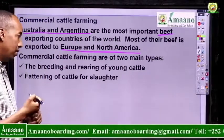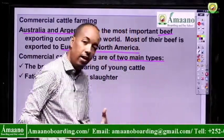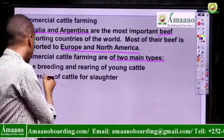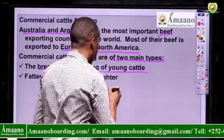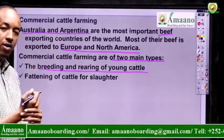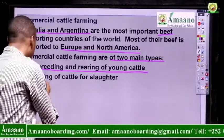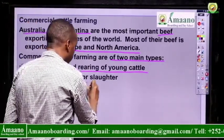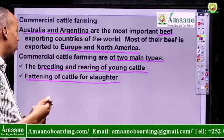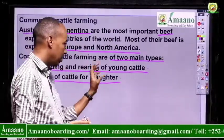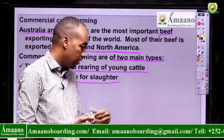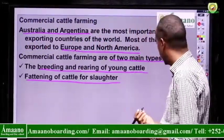Commercial cattle farming serves two main purposes. When cultivating cattle for trade and commerce, it is for two objectives. Number one is breeding — making the number increase and rearing young cattle, with a lot of effort put into increasing numbers. Number two is the fattening of cattle for slaughter — cattle are made very fat by providing very good fodder and food, then slaughtered and their meat exported.